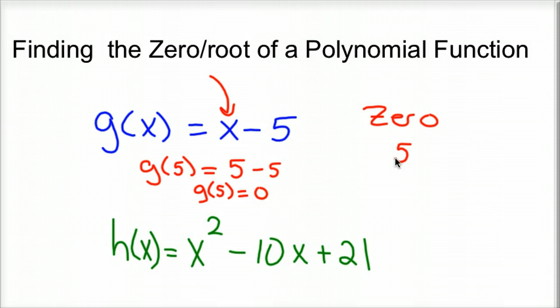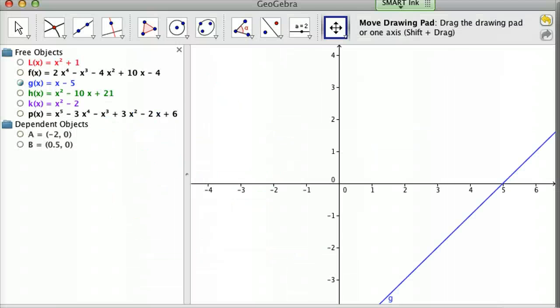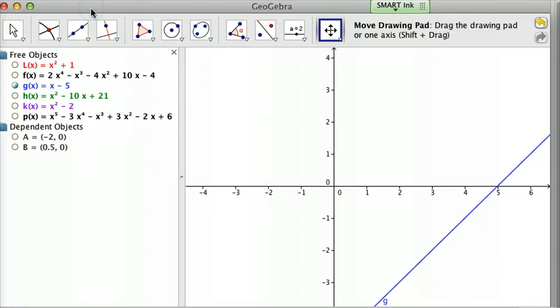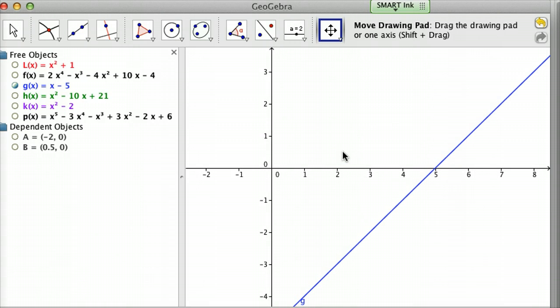Sometimes we'll say x is 5 makes that function zero. Now you can show that graphically, and I have that listed here in GeoGebra. It's the blue function, g(x) = x - 5. I'll move it around here, and we'll intersect. What you'll notice is point C is where that function intersects the x-axis at 5. That's your x-intercept.